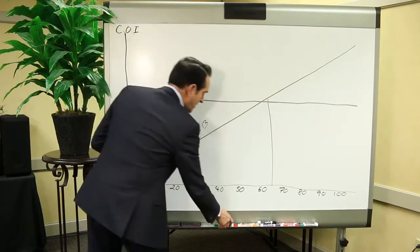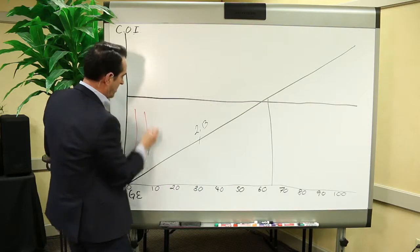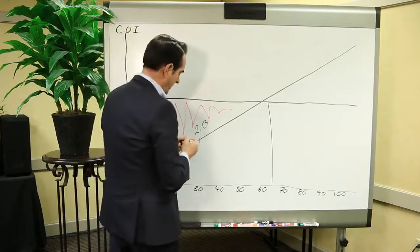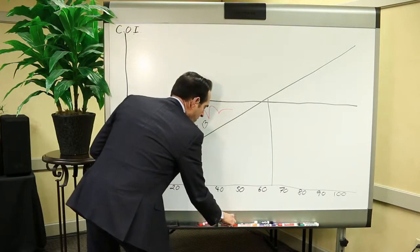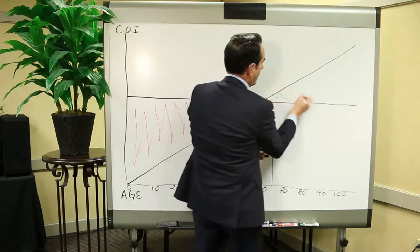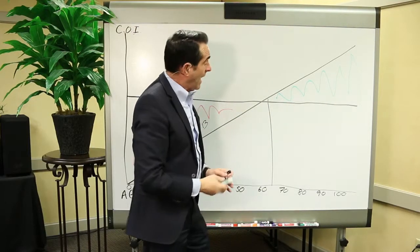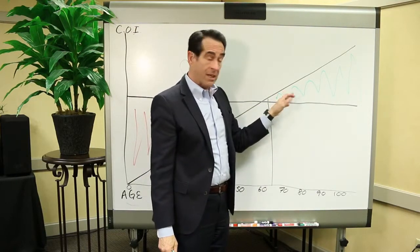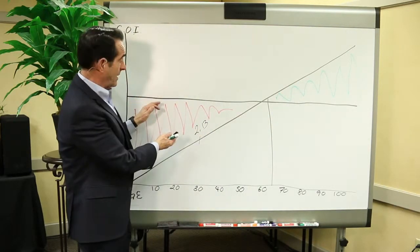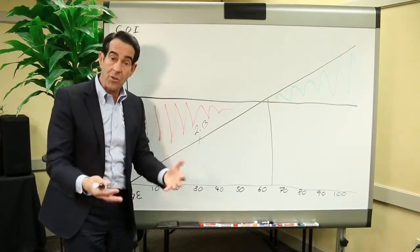So what's happening is you're way overpaying the actual cost in the early years, but you're underpaying the latter years to where what happens after age 65, you keep paying that level premium and you still get covered even though you're not paying near what you should be at that point because you overpaid the early years and that money has accumulated equity or cash value with the insurance company.